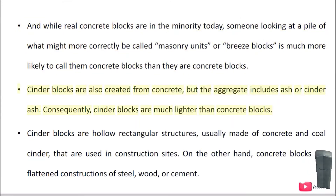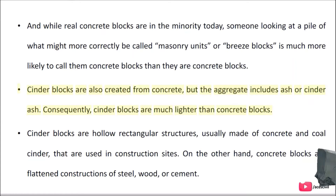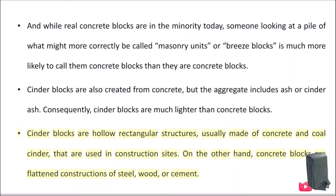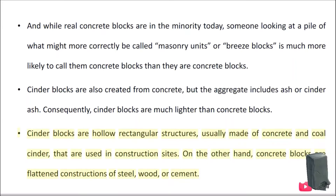Cinder blocks are also created from concrete, but the aggregate includes ash or cinder ash. Consequently, cinder blocks are much lighter than concrete blocks. Cinder blocks are hollow rectangular structures, usually made of concrete and coal cinder, that are used in construction sites. On the other hand, concrete blocks are flattened constructions of steel, wood, or cement.